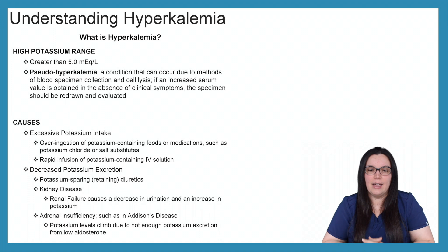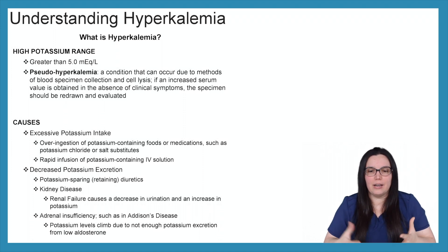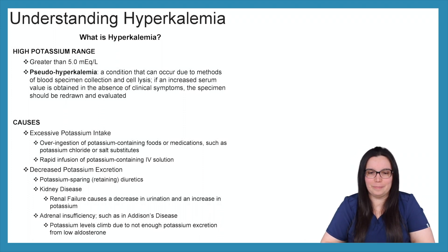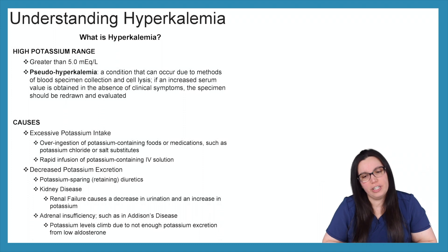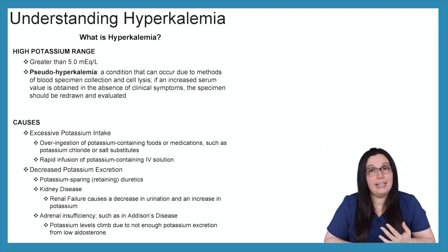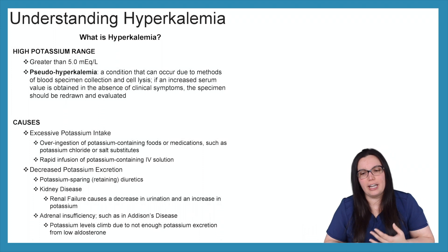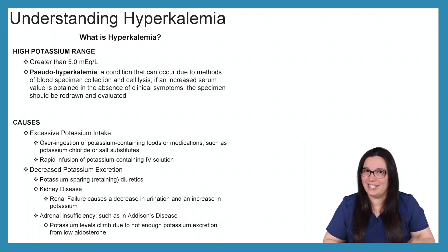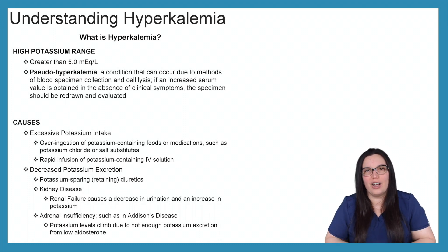So what are some causes of hyperkalemia? We have excessive potassium intake — over-ingestion of potassium-containing foods or medicines, such as potassium chloride or even salt substitutes, which can increase your potassium. Decreased potassium excretion: potassium-sparing diuretics such as spironolactone will keep potassium rather than excrete it. Kidney disease and renal failure cause a decrease in urination and an increase in serum potassium. And adrenal insufficiency, such as Addison's disease, where potassium levels climb due to low aldosterone causing insufficient potassium excretion.